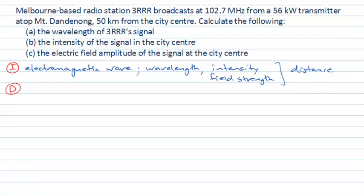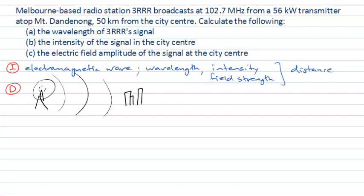A diagram might be useful in our development stage. Here's Mount Dandenong with a transmission tower at the top radiating electromagnetic waves, and some distance away is the city centre. These electromagnetic waves come out in all directions from the transmission tower, and what we're concerned with is at a distance of 50 kilometres, something about the wave properties out there.